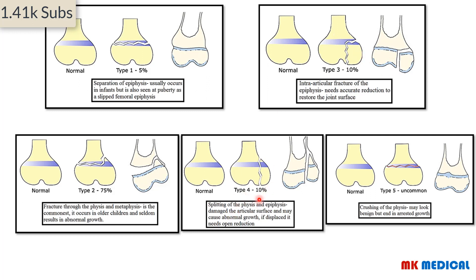Type 3 goes into the physis and spreads towards the epiphysis, affecting that epiphyseal segment. Type 4 splits the physis, the epiphysis, and the articular surface, forming a T shape and potentially causing abnormal growth. Type 5 may appear normal on imaging but ultimately results in decreased growth of the individual.